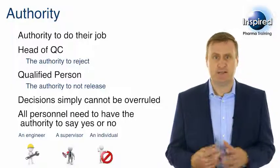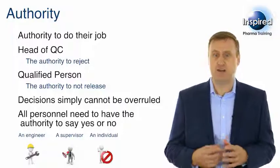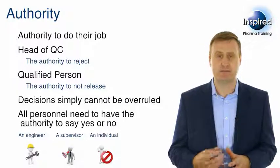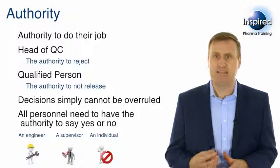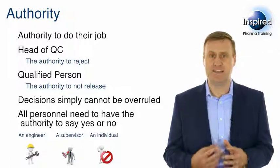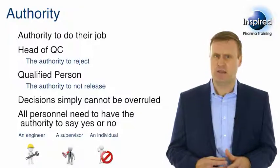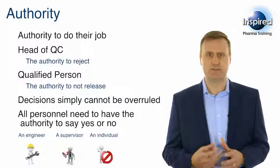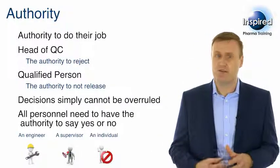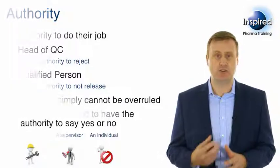An engineer maintaining an item of equipment must have the authority to say 'do not use' if they believe that it is unsafe. A supervisor must have the authority to stop someone working in the manufacturing area if they are unwell or if their health could be detrimental to the product. An individual who is not trained to do a job must have the authority to say no if they feel they are not trained sufficiently. So when we look at assigning roles and responsibilities to anyone, we also need to ensure that we give the right authority to the person so they can properly do their job.